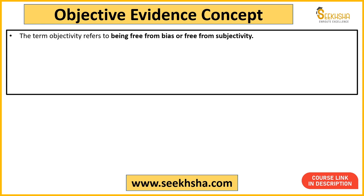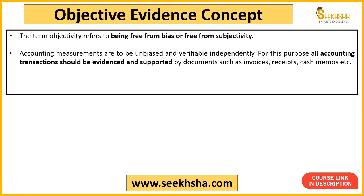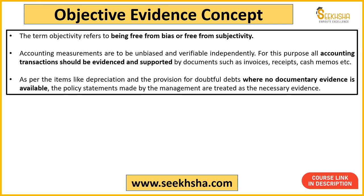Basically this is what happens in your accounting process. There is objectivity — you can be free from some kind of bias, some kind of subjectivity — and you can verify transactions. This is why evidence support is very important. It can be invoices, receipts, or cash memos. Some items like depreciation, or if management has made a doubtful debt provision, also need evidence.